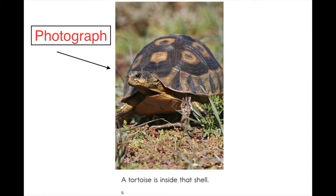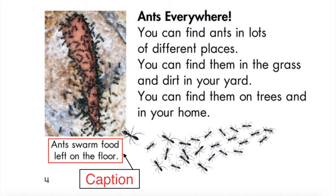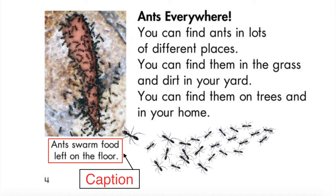Photographs help readers see exactly what something or someone looks like. Captions are words near the picture or photograph that help readers better understand it. The heading explains what this section of the story is about.